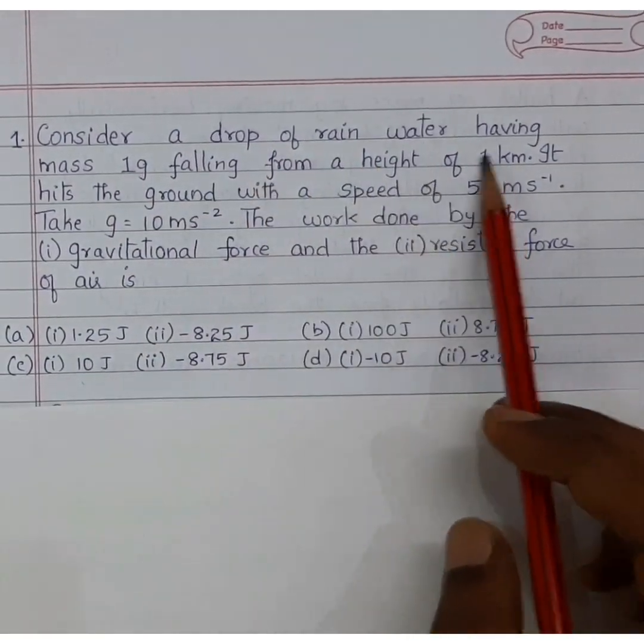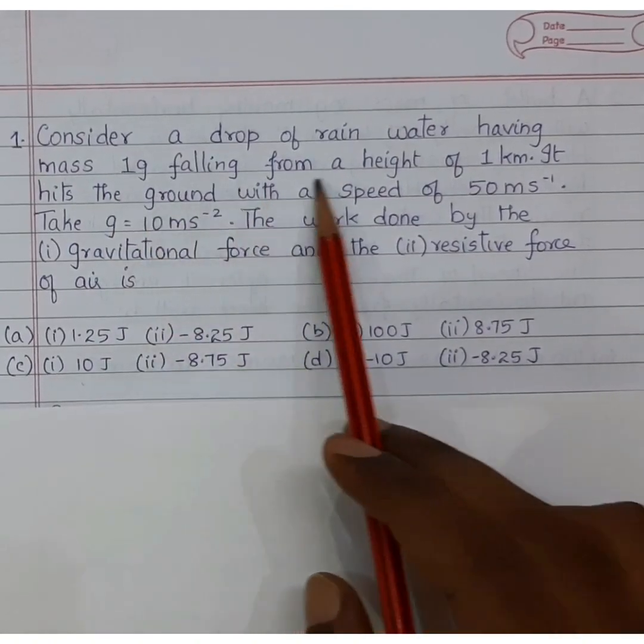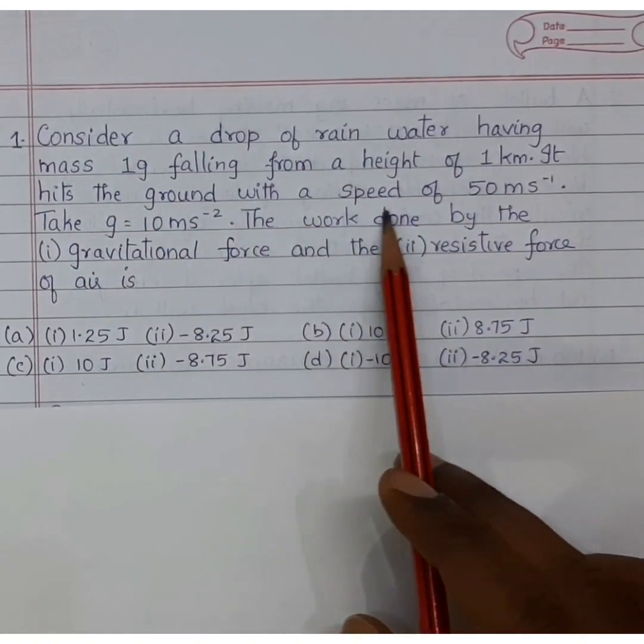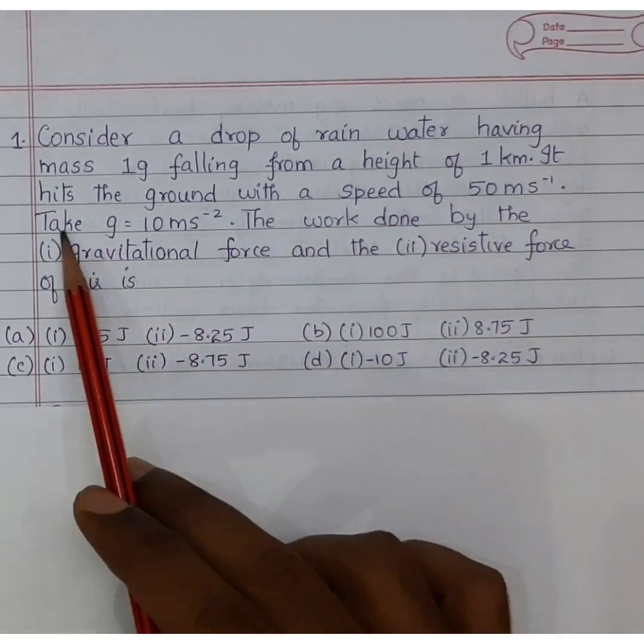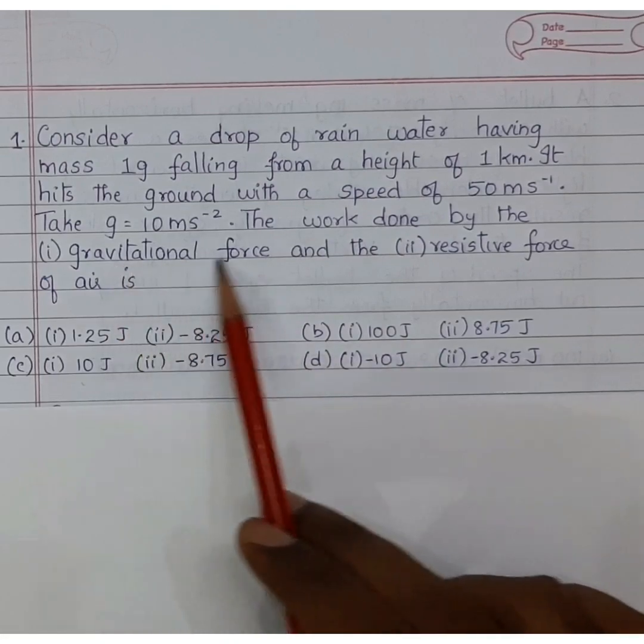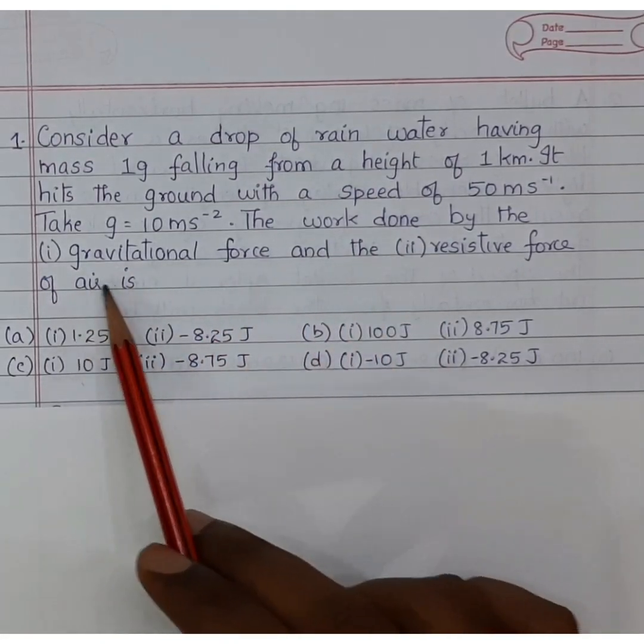Consider a drop of rain water having mass 1 gram falling from a height of 1 kilometer. It hits the ground with a speed of 50 meter per second. Take g is equal to 10 meter per second square. The work done by the gravitational force and the resistive force of air is?